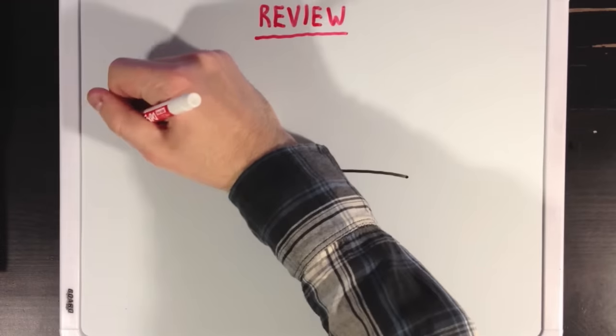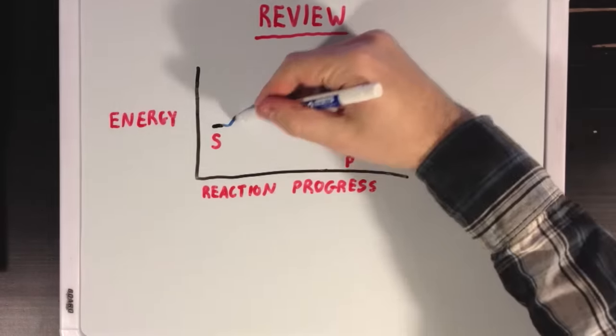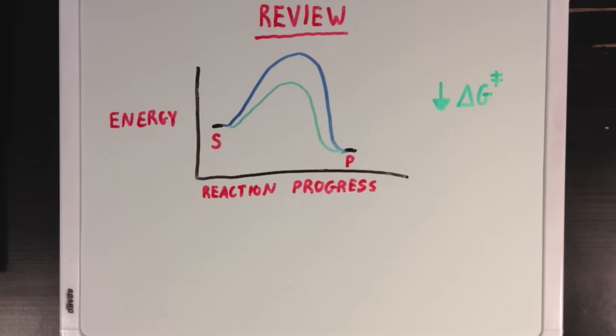But first, let's review the idea that enzymes speed up reactions by lowering the delta G of the transition state, or lowering the activation energy of a reaction.